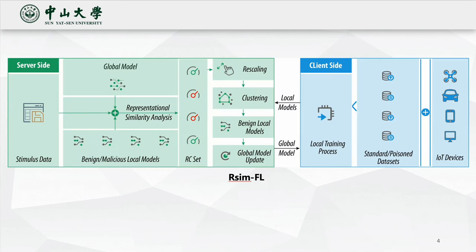To overcome these limits, we introduce representational similarity analysis into the defense against data poisoning and propose RSIMFL. After all the local models are collected by the server, based on the calculated representational consistency set and clustering algorithm, benign local models are separated and then used to update the global model.